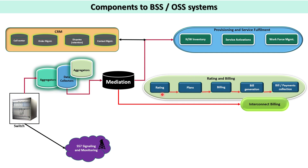In the billing system, the process starts when CDRs are received from the mediation system. In the billing system, rating happens — when a CDR is rated, it looks for the plan the customer has opted for, and based on that the billing of those CDRs happens for those particular subscribers. Then the bill is generated and comes to the end user for a particular bill period, and the end user pays for the usage.